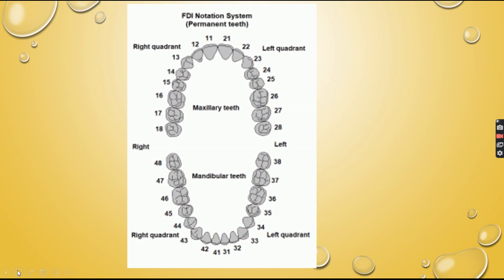The advantages of the FDI notation system: it is very simple and accurate, easy to memorize, simple to teach and understand, easy to translate into computer input, and communicable in print and conversation. The disadvantages are that in deciduous dentition there can be confusion, and it may be difficult to memorize for specialists other than periodontists, making it difficult to define or understand.